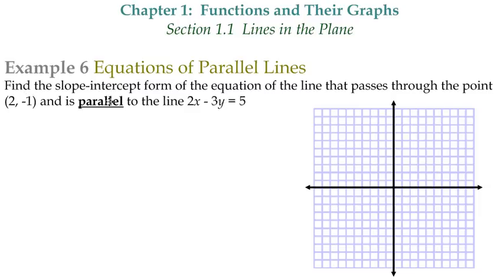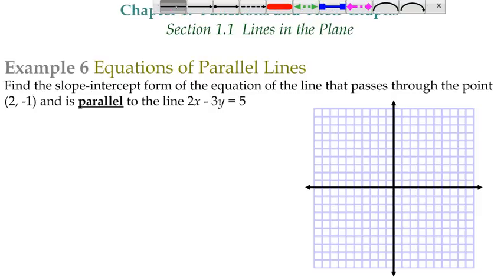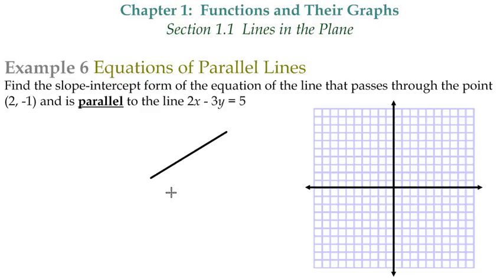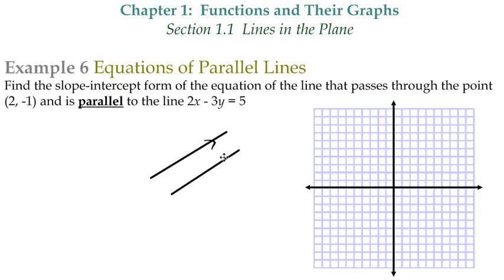So back to geometry — parallel lines. Let's just go over what parallel lines are. It's two lines that run side by side that never touch. So these two lines right here, when you put these little arrows on them, that means they're parallel. You probably learned that in geometry.